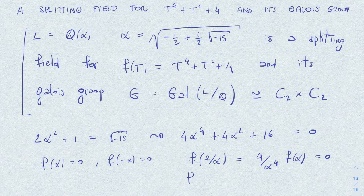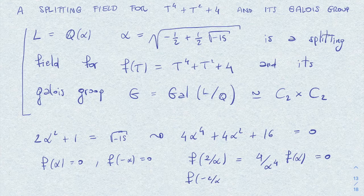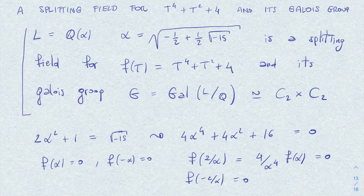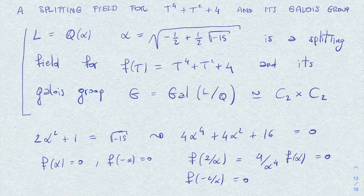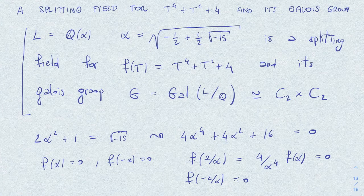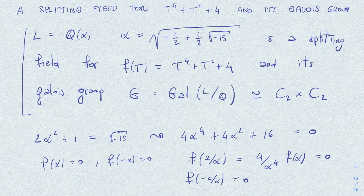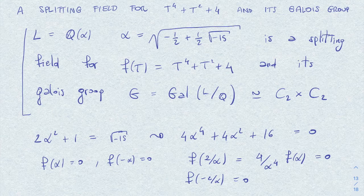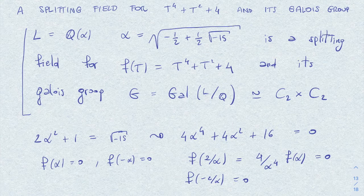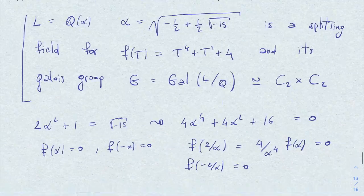And for the same reason, f of minus 2 over alpha is 0. So here we have a polynomial of degree 4, and these are four distinct roots. We can conclude that L is a splitting field. So f totally splits inside this extension.